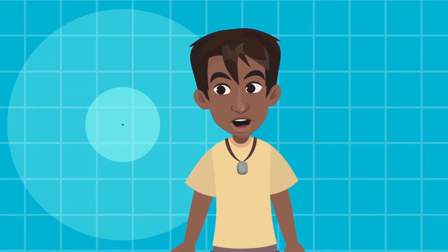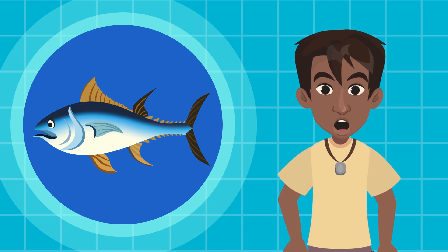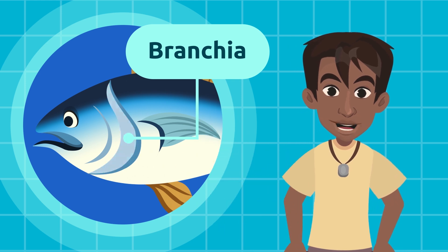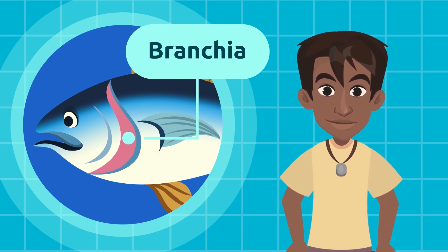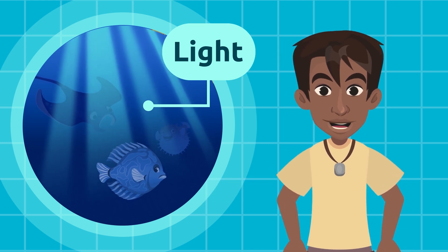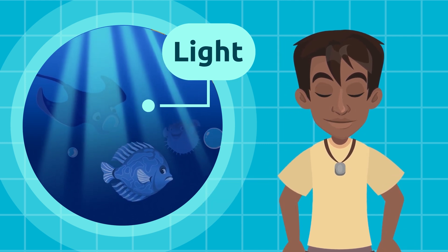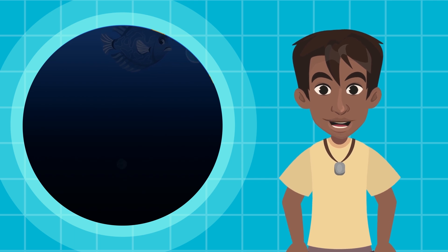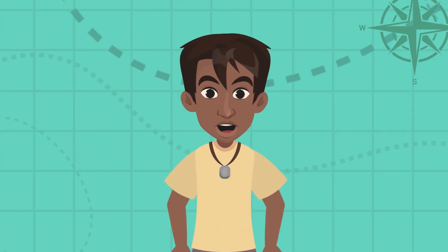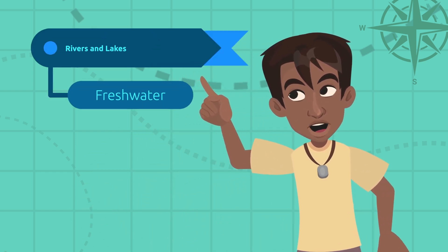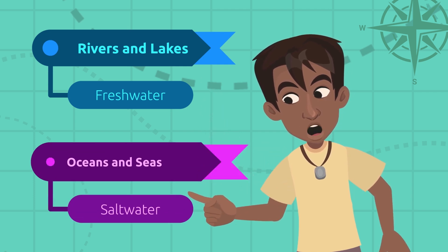In aquatic habitats, living beings have adapted to carry out their activities under the water. An example would be fish branchia, which allow them to breathe underwater. In these habitats, light is a very important resource too, and sometimes due to contamination it cannot reach deep enough to the bottom of rivers, lakes, or oceans, leaving the living beings without an essential resource.